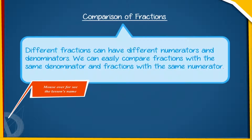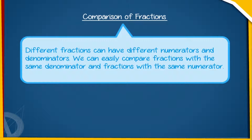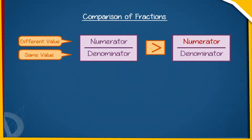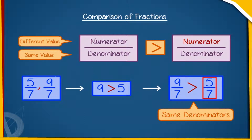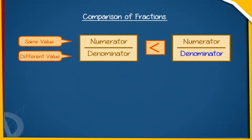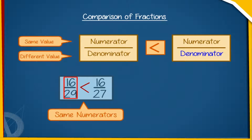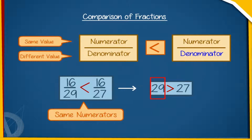Comparison of Fractions: Fractions can have different numerators and denominators. We can easily compare fractions with the same denominator and fractions with the same numerator. If two fractions have the same denominator, the fraction with the greater numerator is greater. For example, comparing 5 by 7 and 9 by 7, since 9 is greater than 5, 9 by 7 is greater than 5 by 7. If two fractions have the same numerator, the fraction with the greater denominator is smaller. For example, 16 by 29 is less than 16 by 27 because 29 is greater than 27.